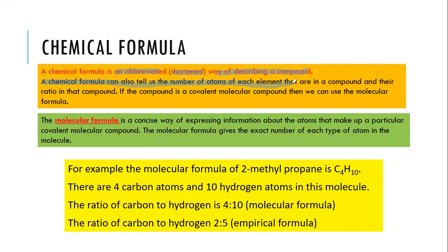For example, we have two hydrogen and one oxygen, or two hydrogen and two oxygen, or two oxygen, one carbon and one oxygen — so you can see the ratio between the elements in a compound, in a structure.